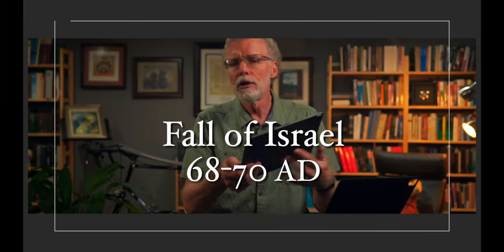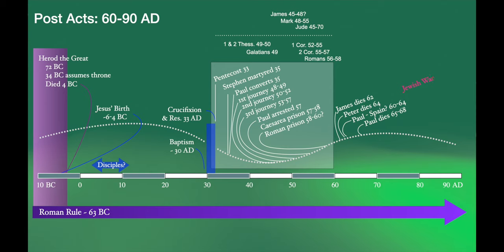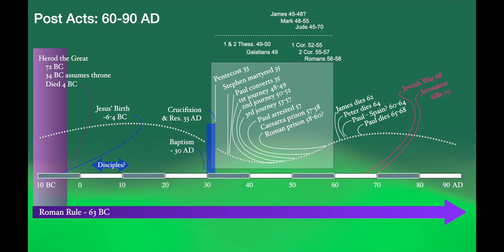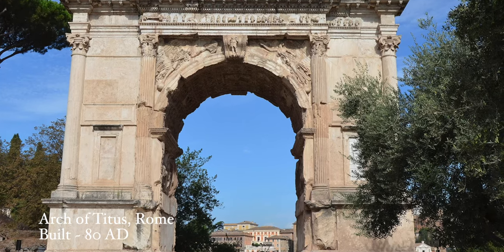The 800-pound gorilla in the room is what happens in Israel around this time. In 68 AD, Israel rebels against Rome, most likely picking this time because of a succession of leadership in Rome and a perceived leadership vacuum. Unfortunately their attempt was crushed. In 70 AD, Jerusalem is destroyed and burnt to the ground. The people of Israel are carried off into slavery, the temple is pillaged, and Israel as a nation really ceases to exist at this time.